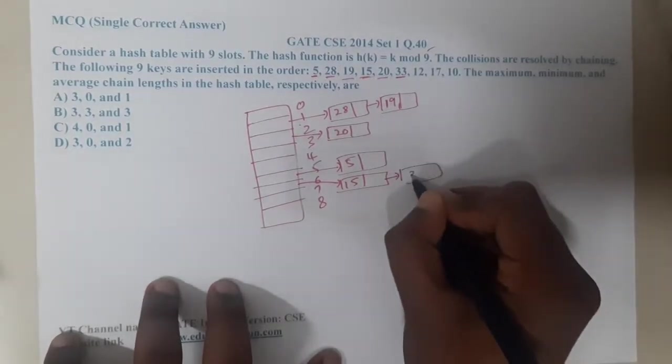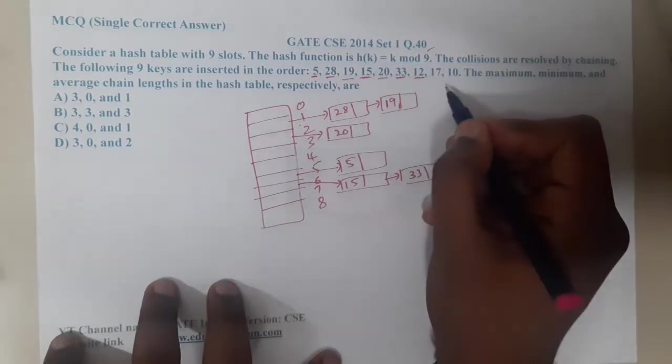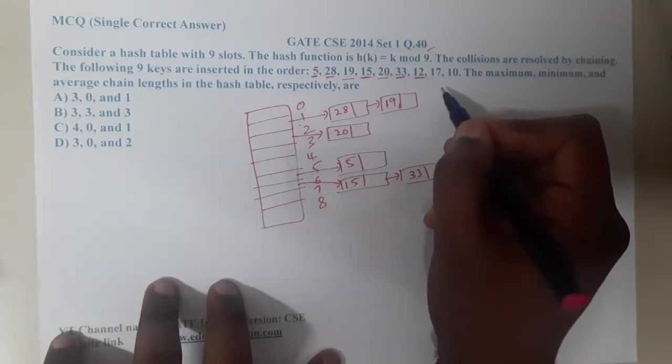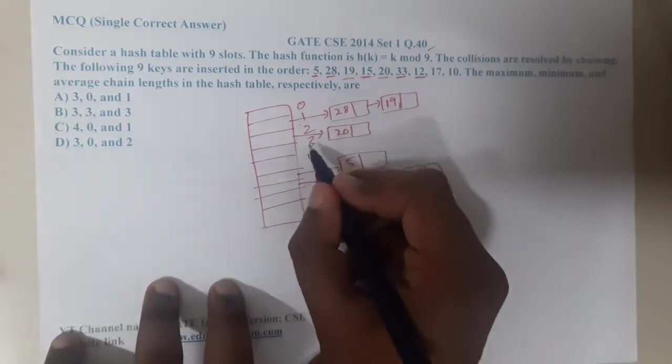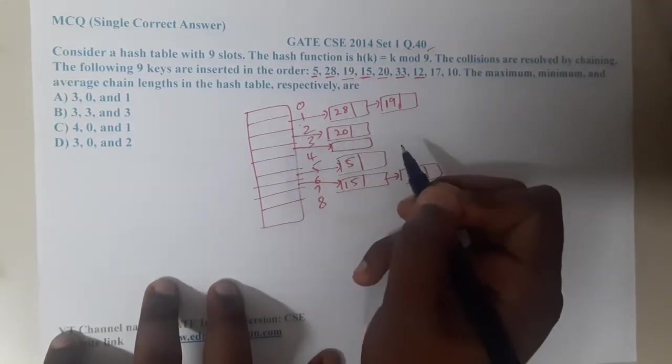Moving on, 33 mod 9, which is nothing but 6. So where is 6? This is 6. Similarly, 12 mod 9, which will return 3. So this is 3, for 12.